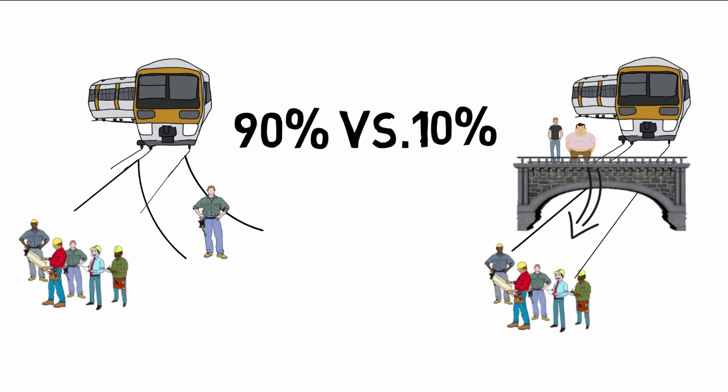Maybe ethical dilemmas are not so utilitarian after all. While both scenarios are about exchanging one life to save five, people do not see them as being ethically equivalent. It is okay to pull a lever. It is not okay to push the man.